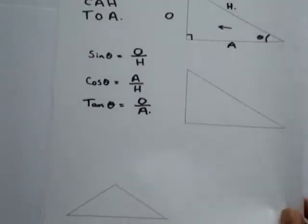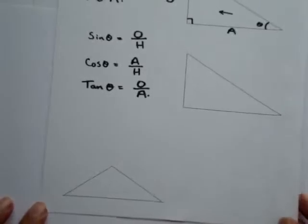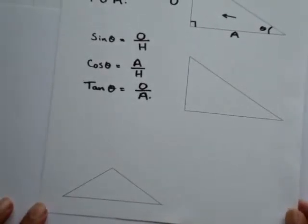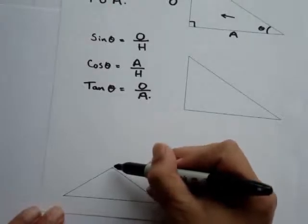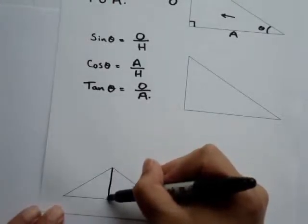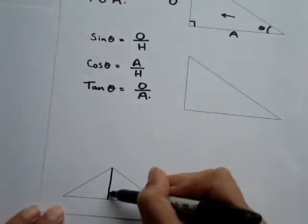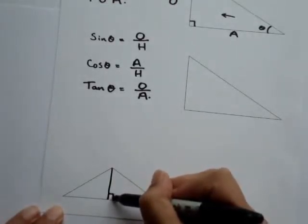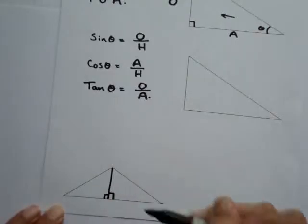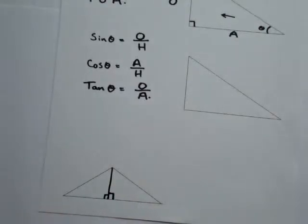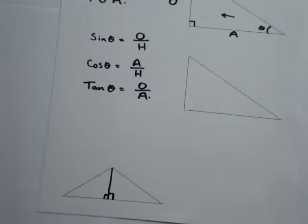Sometimes, just as a trick, we can be given an isosceles triangle, and if we draw a vertical line from the vertex, we can make this into two right angle triangles, and then we can apply our Pythagorean theorem or our sine and cosine trigonometric ratios.